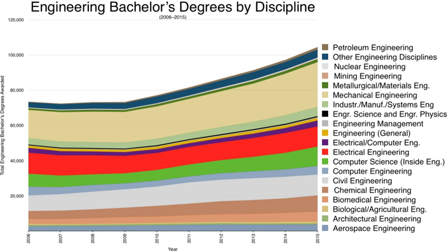Engineering degree education in Canada is highly regulated by the Canadian Council of Professional Engineers and its Canadian Engineering Accreditation Board (CEAB). In Canada, there are 43 institutions offering 278 engineering accredited programmes delivering a bachelor's degree after four years. Many schools also offer graduate level degrees in the applied sciences. Accreditation means that students who successfully complete the accredited programme will have received sufficient engineering knowledge to meet the requirements of licensure as a professional engineer.